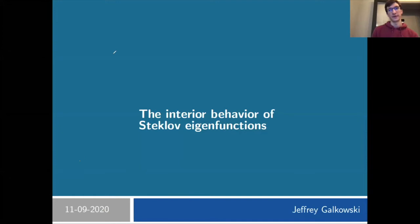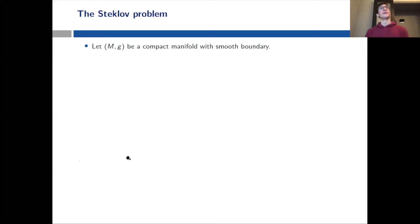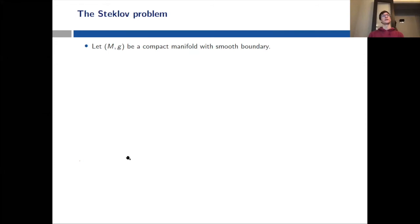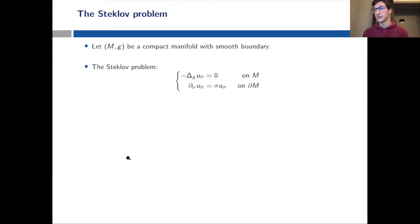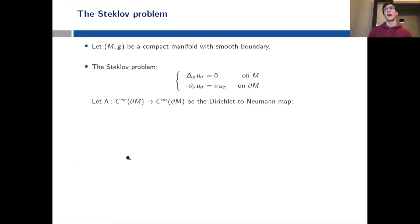Let me remind those of you who may not have been here — or who would like a reminder — what the Steklov problem is. I'm always going to be working on a compact manifold with smooth boundary. The Steklov problem is the following: you solve the Laplace equation inside your manifold, and on the boundary you have that the Neumann data for your function is a multiple of the Dirichlet data.